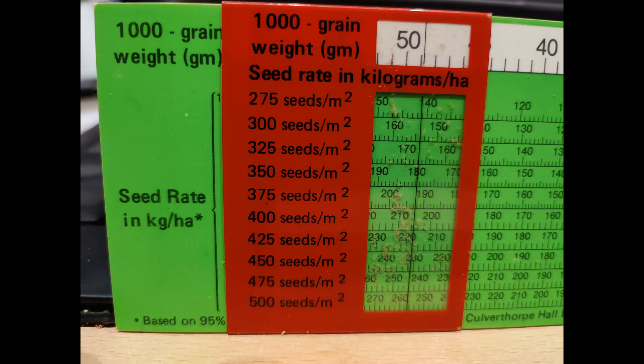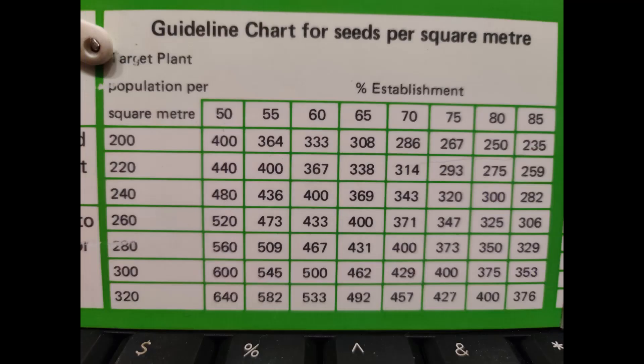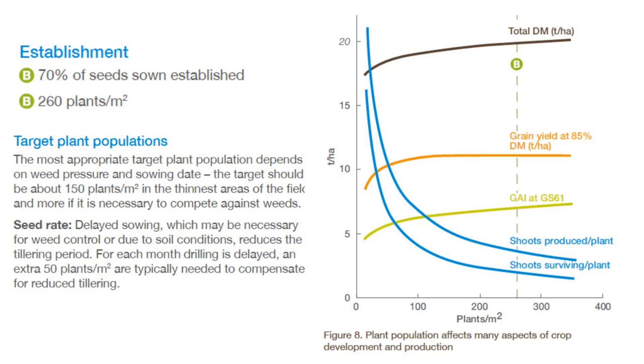This slide is based on a 95% establishment, but historically we believe it's much closer to 50%. So if we turn the tool over, a 50% establishment requires 400 seeds to achieve 200 plants per metre squared. Obviously 400 divided by 2 — assuming 150 plants per metre squared and a 49 gram thousand grain weight divided by 50% — we need a minimum of 147 kilos per hectare.